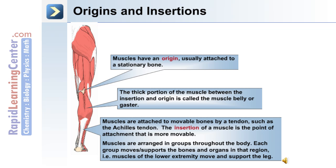Muscles are attached to movable bones by a tendon, such as the Achilles tendon in this example. The insertion of a muscle is the point of attachment that's more movable. Muscles are arranged in groups throughout the body, and each group moves or supports the bones and organs in that region — for example, muscles of the lower extremity move and support the leg.